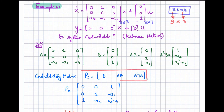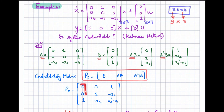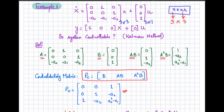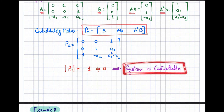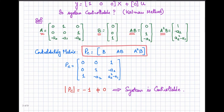The controllability matrix requires matrix B, the product AB, and the product A²B. Computing these products gives us the three columns. Combining B, AB, and A²B sets up the controllability matrix. The determinant of this matrix is equal to −1, which is not zero, meaning the matrix is not singular. Therefore, the system is controllable according to Kalman's method.